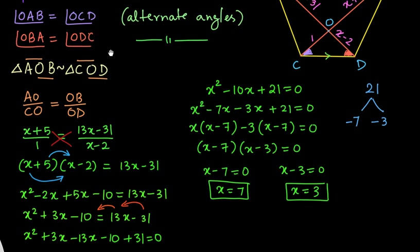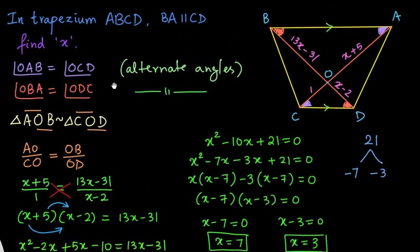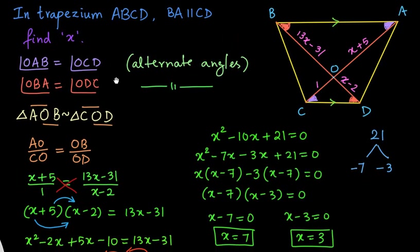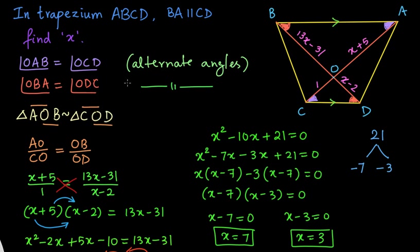We had a problem on geometry, but we converted it into a problem of algebra, and we get the value of X as 7 and 3. I hope all of you liked the solution. For more such interesting solutions, please subscribe to my channel and keep watching my videos. I will see you all in the next video.